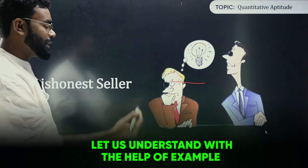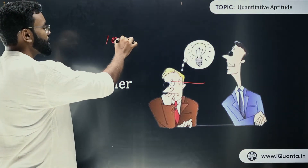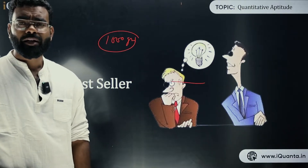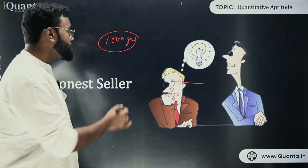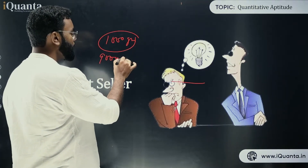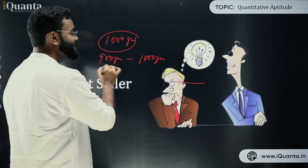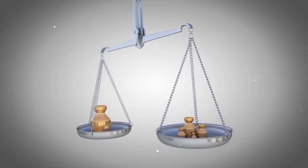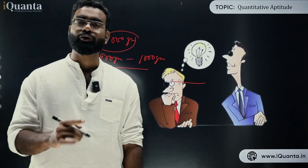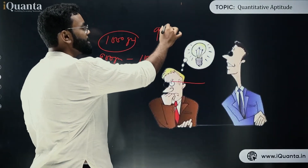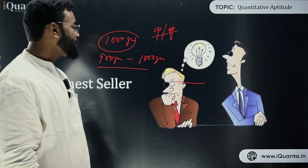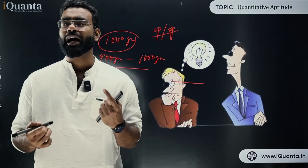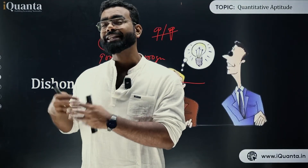Let me give you a simple example. Let's say I need to buy 1000 grams from someone, and while selling, a dishonest seller uses a weight balance which measures 900 grams as 1000 grams. Let's assume the cost price and the selling price are both the same. So by price he is not making any profit — the profit comes from giving you less than what you paid for.